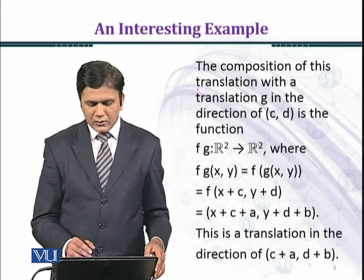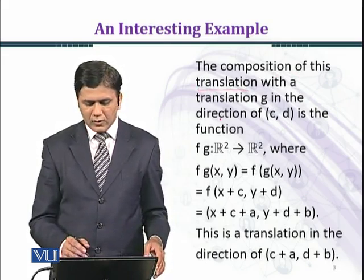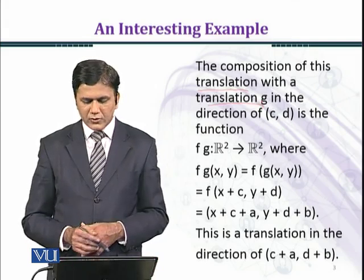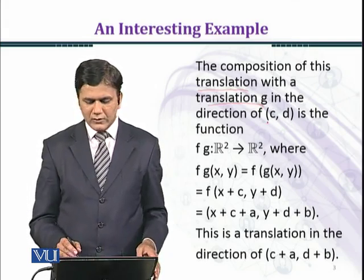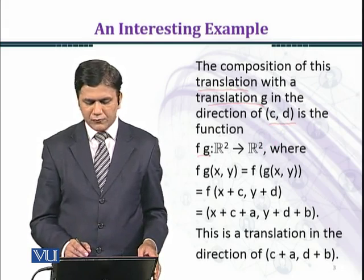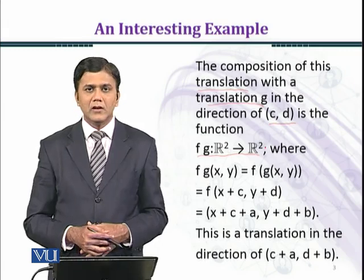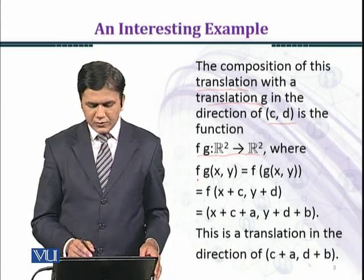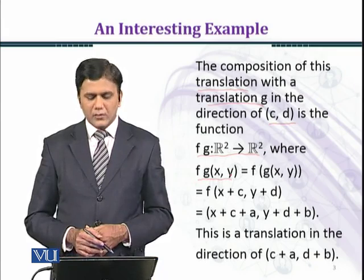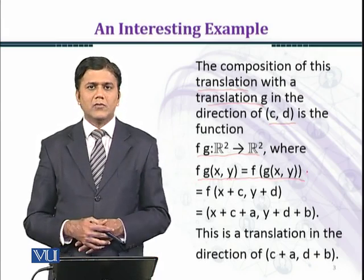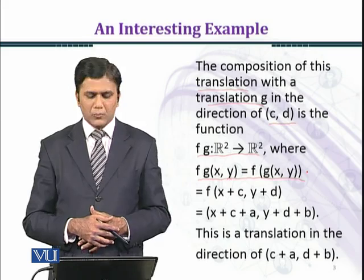The composition of this translation with a translation g in the direction of (c, d) is the function f∘g from R² to R², where (f∘g)(x, y) = f(g(x, y)). Here we are composing two functions f and g.